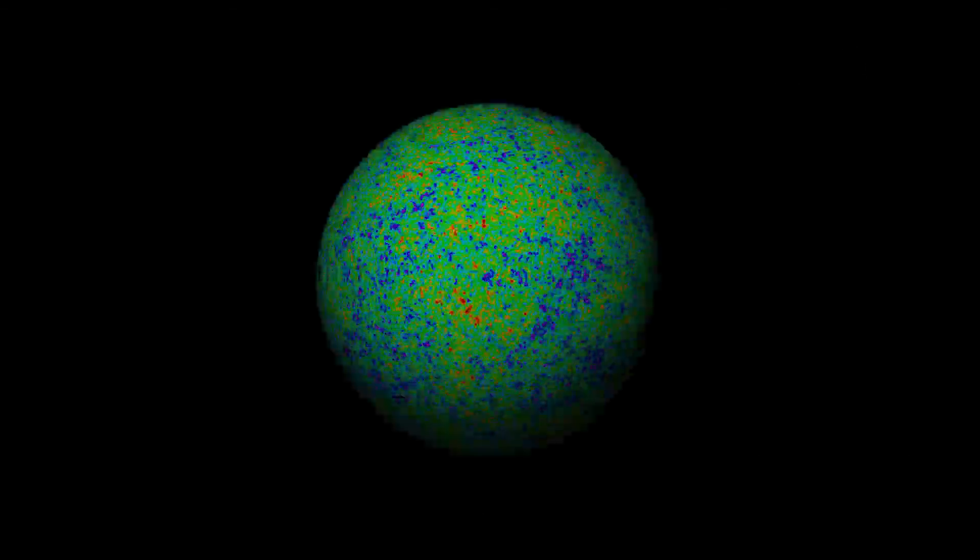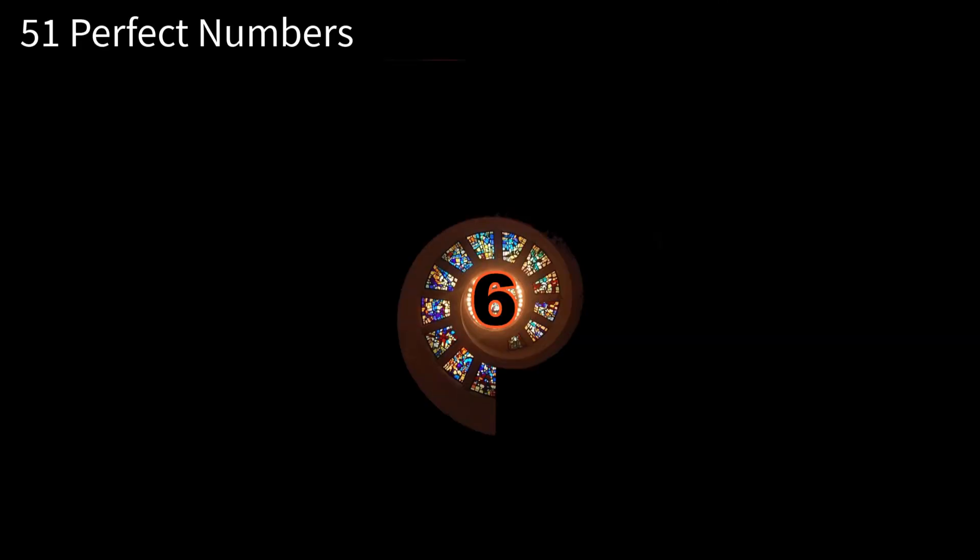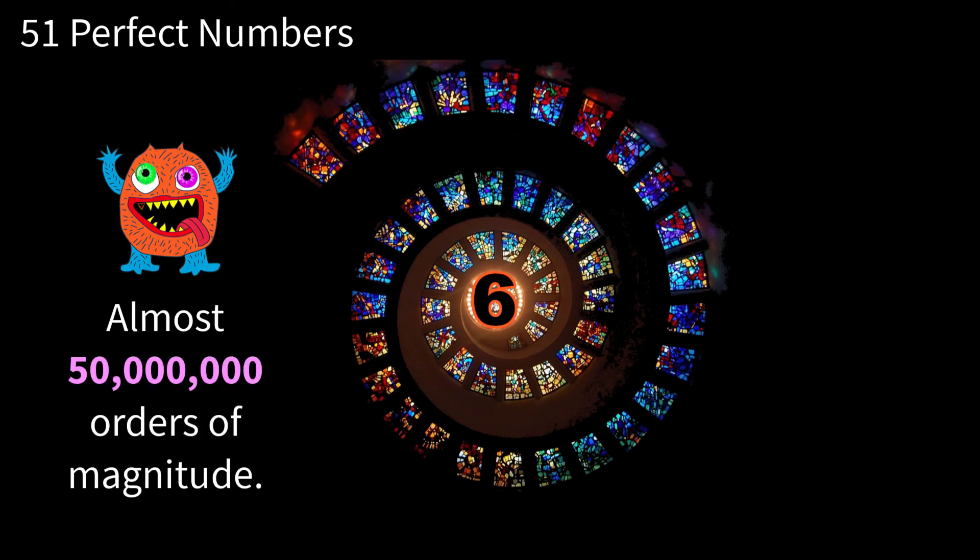Our observable universe appears to be gigantic. But perfect numbers remind us that the orders of magnitude involved in shaping its entire physical scale are actually rather small. Of course, our universe may be much bigger than the one our observations are confined to by the speed of light.